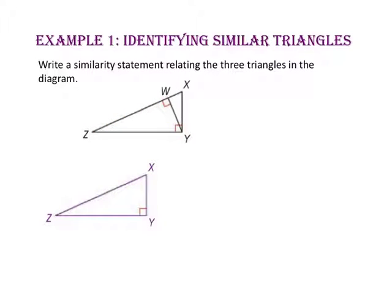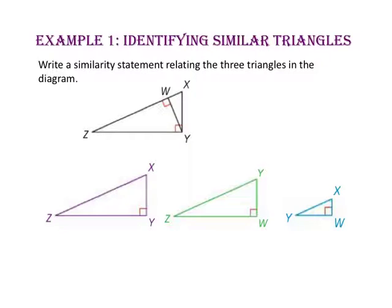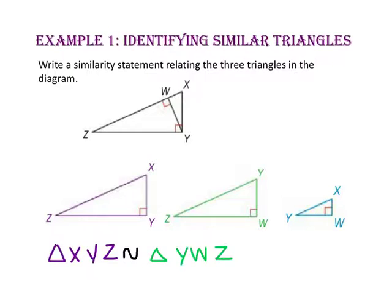Now let's redraw the medium right triangle, triangle Y, W, Z. And finally let's draw the small triangle, triangle X, W, Y. Now that all three triangles are oriented the same way, the similarity statement is: triangle X, Y, Z is similar to triangle Y, W, Z, which is similar to triangle X, W, Y.